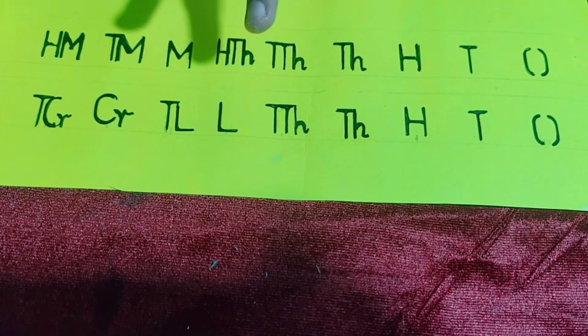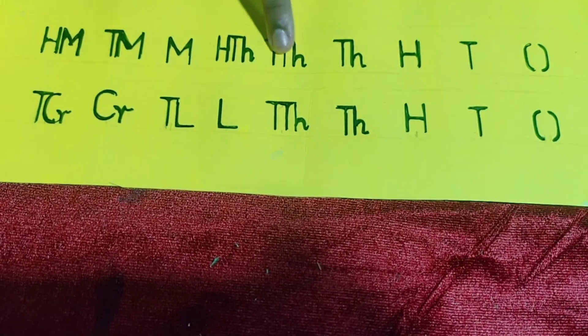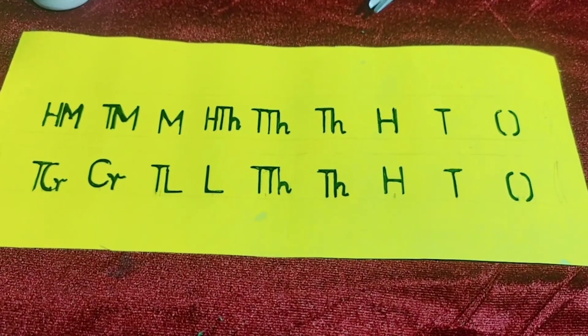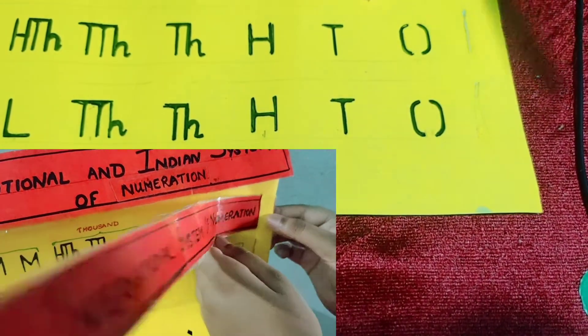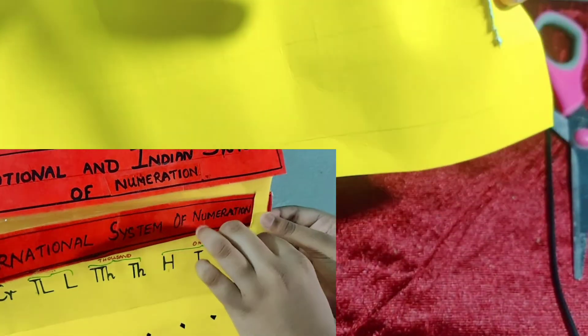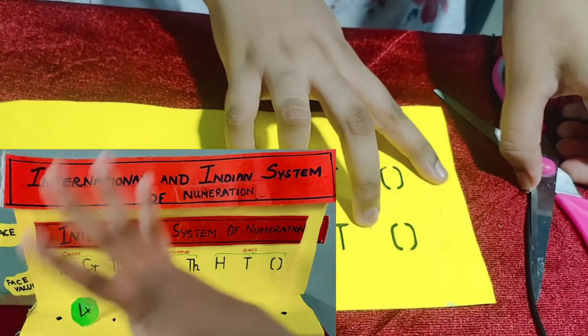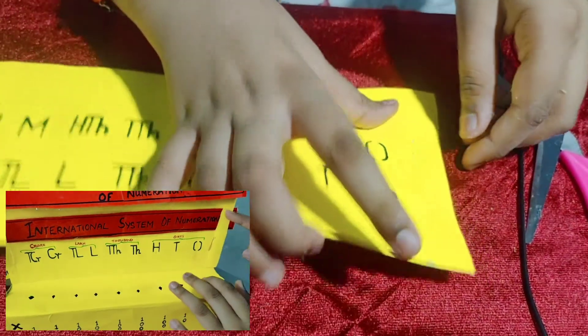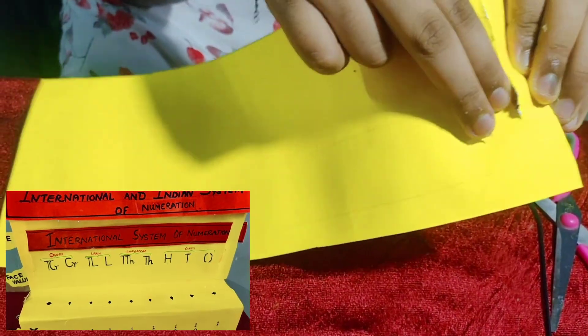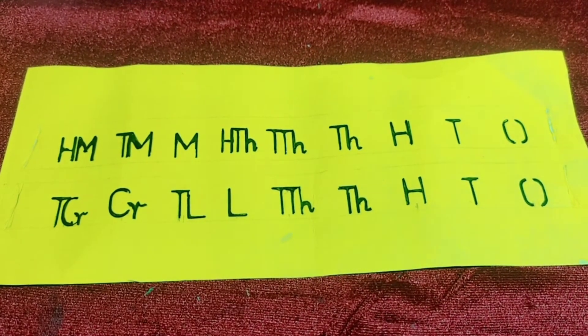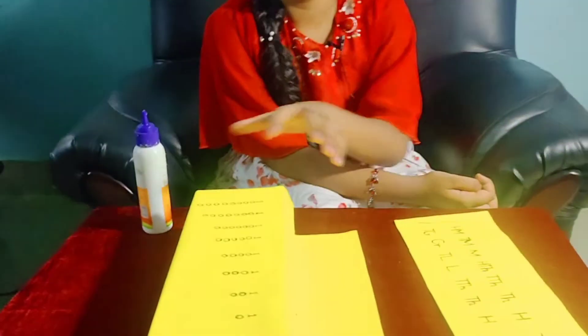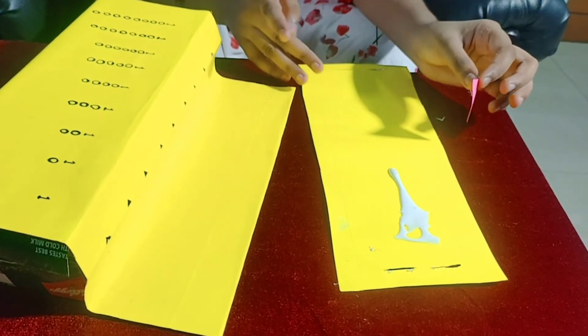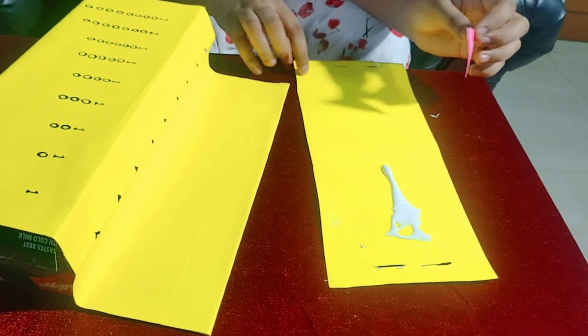In a chart paper we have to write Indian and international system of numerals. Next step is make a hole using the scissor. To insert this here accordingly we have to make hole. We have to make 4 such holes. On this chart paper we have to group this period also. Next step is we have to fix this chart paper in this model. We have to apply glue only in this area not outside the hole.